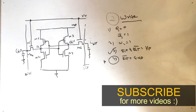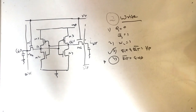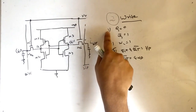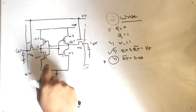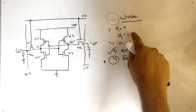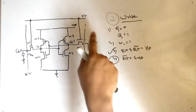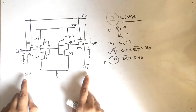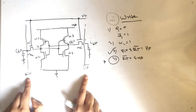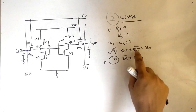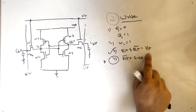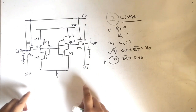The second point is the write operation — this is a very important point, so please take special care. Let's say the memory has the value 0, which means Q is 0 and Q-bar is 1. The second condition is that the word line is 1, because we have to access these lines. The third point is that bit and bit-bar are input lines, because we have to write into the memory.